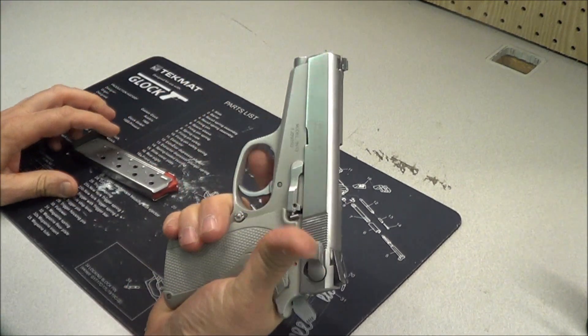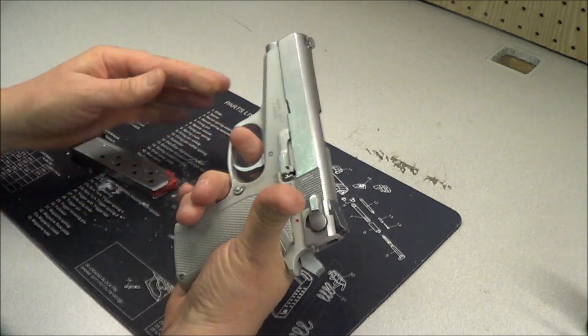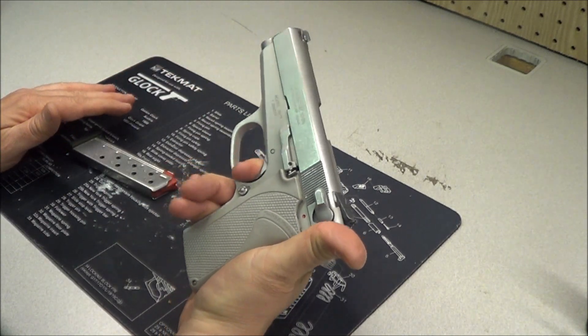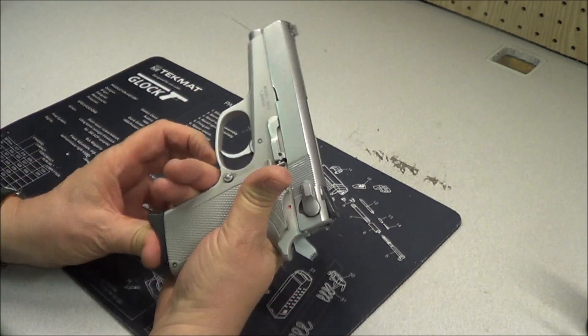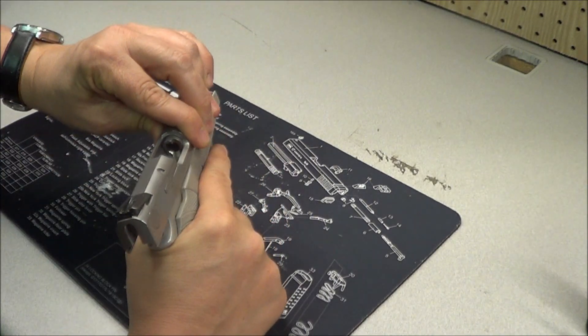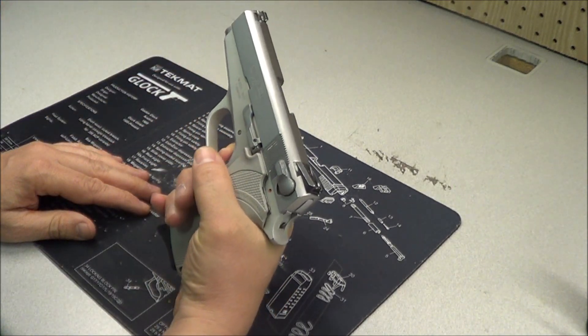And this pistol, it has a magazine disconnect. If the magazine's out, when you pull the trigger, the hammer won't drop. Magazine in, and it is empty. The hammer drops.